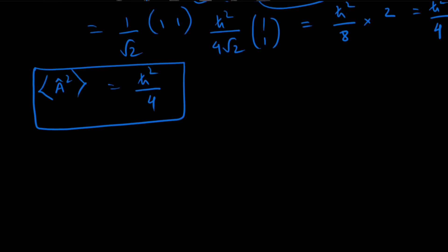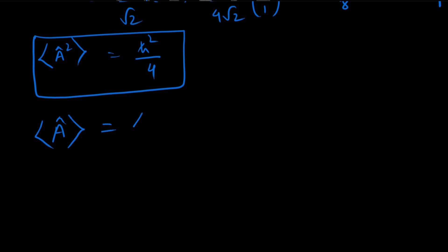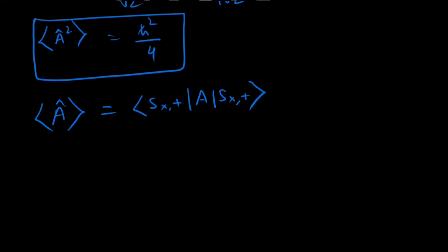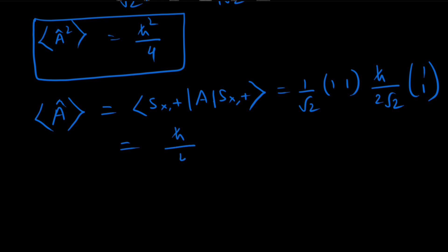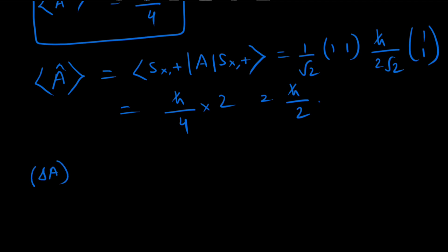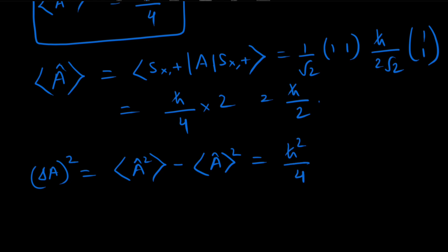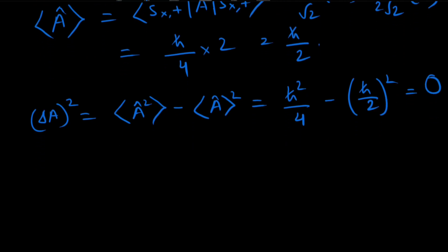The expectation value ⟨A⟩ = ⟨sx+|Sx|sx+⟩ = (1/√2)(1,1) · (ℏ/2√2)(1,1) = (ℏ/4) × 2 = ℏ/2. Then ΔA² = ⟨A²⟩ − ⟨A⟩² = ℏ²/4 − (ℏ/2)² = ℏ²/4 − ℏ²/4 = 0.